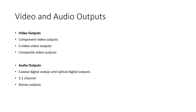For video outputs, component video outputs provide the highest quality video signal to your TV but are quite rare — only the newest high-end TVs support them, identified by three separate connectors for R, G, and B components. S-Video outputs are common and provide very good picture quality, with every DVD player having at least one. Composite video outputs are the most common, usually identified by a yellow plastic connector, and provide adequate picture quality.